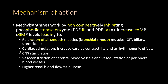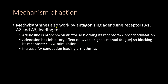Higher cyclic AMP and GMP also lead to cardiac stimulation, resulting in increased cardiac contractility and an arrhythmogenic effect. This also leads to central nervous system stimulation, vasoconstriction of the cerebral blood vessels, and vasodilation of the peripheral blood vessels. Because of the vasodilation of the peripheral blood vessels, there is higher renal blood flow, which leads to diuresis.